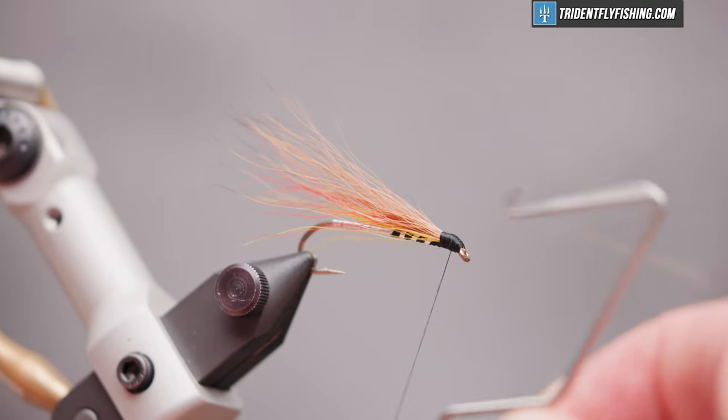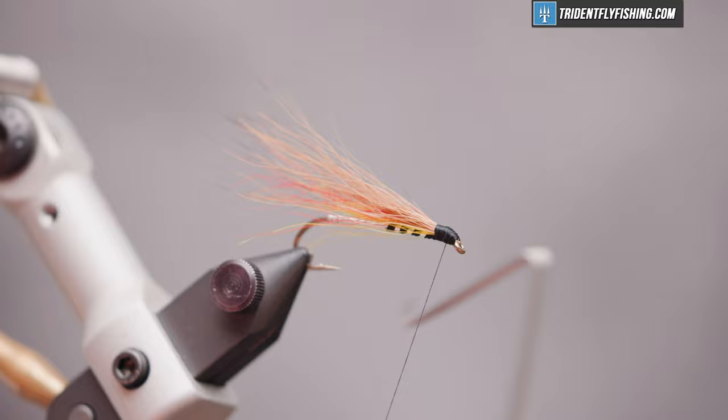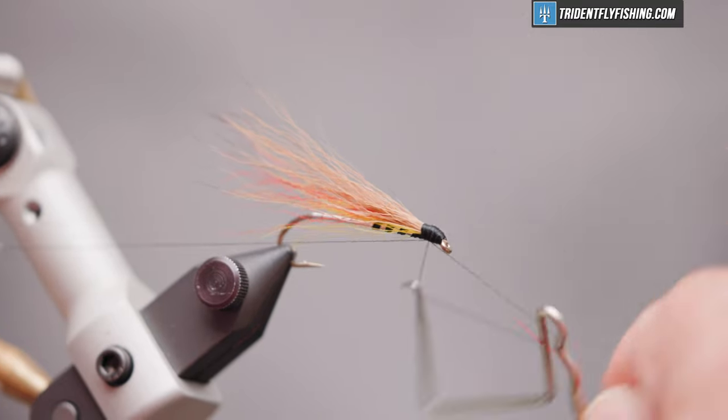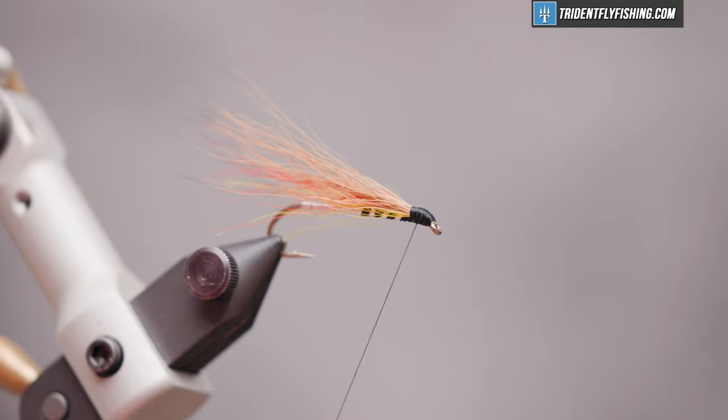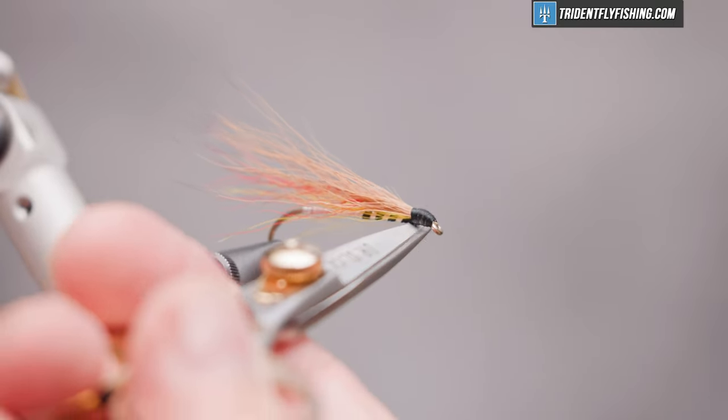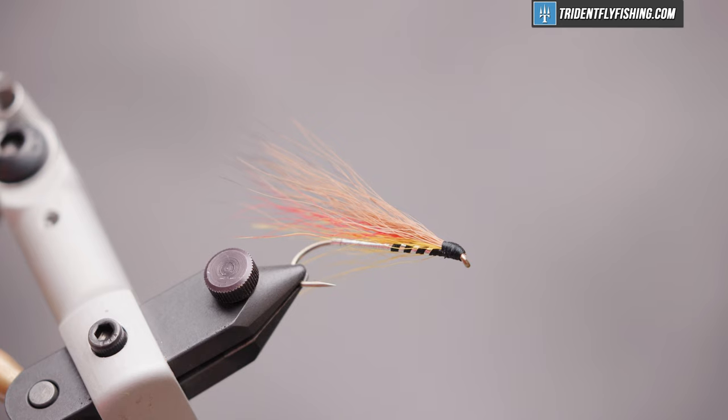When we're happy with the shape of the head, take out the whip finish tool. Four or five turn whip finish, secure it, cut the thread, and add some head cement.